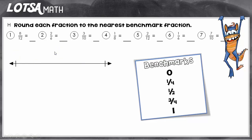Let's look at another example. On number three, we have three-tenths. That means this number line is going to represent ten parts. So I'm going to go ahead and put little dots for my benchmarks. I know that zero-tenths would be here, ten-tenths would be here, and right in the middle would be five-tenths. Now I'm going to take three-tenths and just put it on the number line where I think it would go. If this is zero and this is five, three-tenths would be somewhere around here. And once I put that on the number line, I can see that it's closest to the benchmark one-fourth. So three-tenths would round to one-fourth.